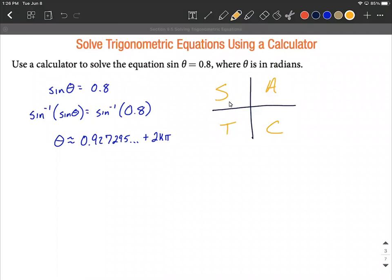Only sine is going to be positive in the second quadrant, tangent in the third, and cosine in the fourth. So we're looking for when sine equals a positive ratio, so a positive value on the right hand side. We already found the one in the first quadrant, or we just found quadrant one using our calculator.